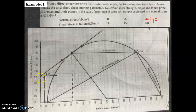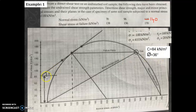Once you draw the envelope, find the angle φ. Use a protractor and find that value. You should get φ equal to approximately 36 degrees. Also measure the distance from the origin to where the envelope intercepts the y-axis — that is c, the cohesion. You should get c approximately equal to 84 kN/m².